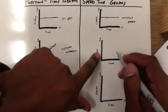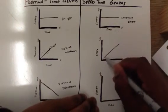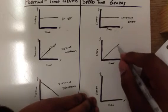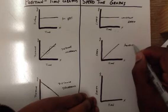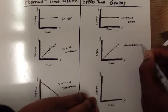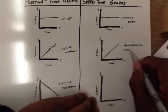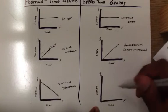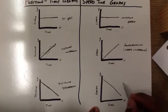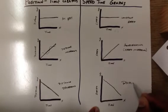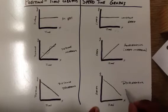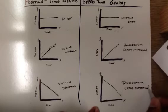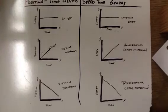Coming back to speed-time graphs: if your graph slopes upward, that means you are accelerating — your speed is increasing. If your graph slopes downward, you are decelerating — your speed is decreasing. Let's look at an example so you can get a good handle on what's going on, because you will have to interpret graphs.